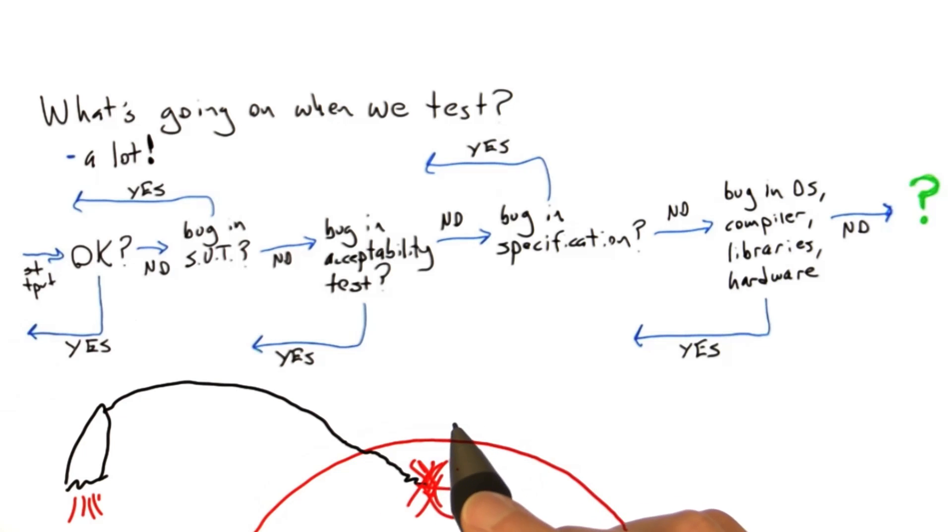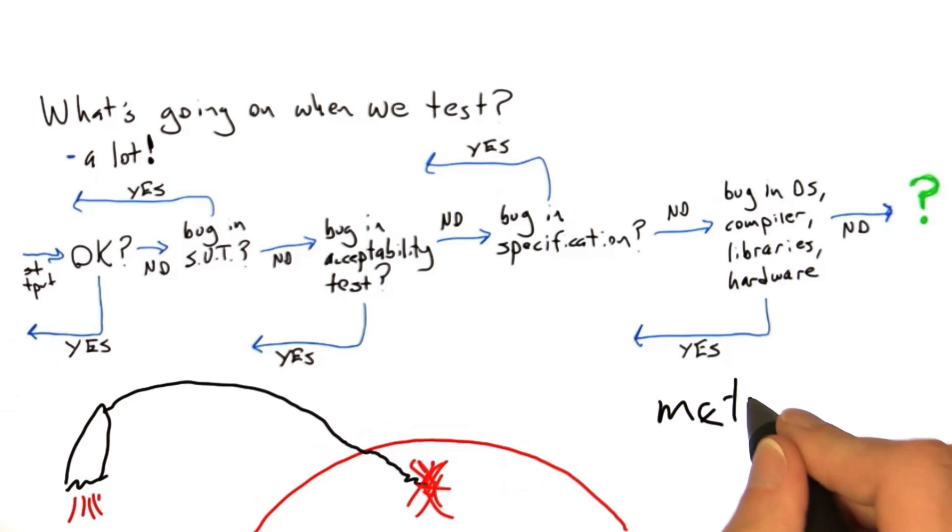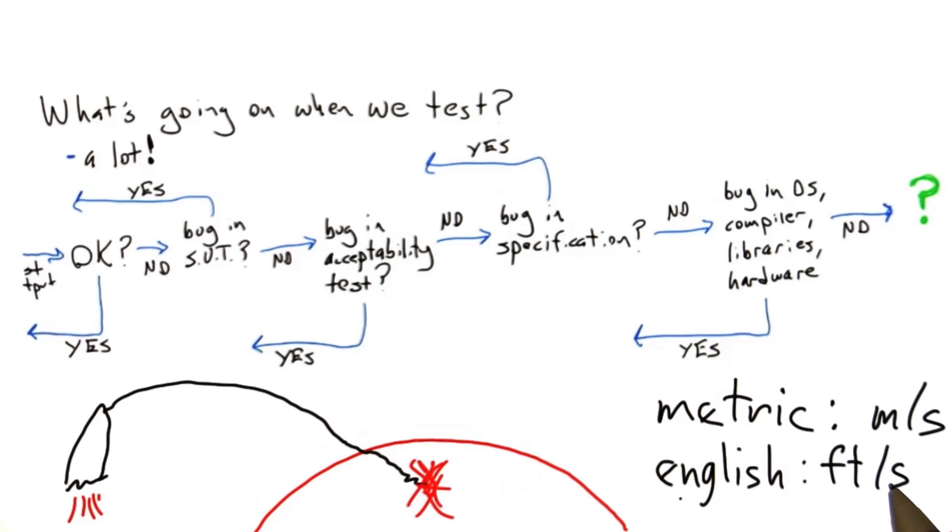What happened was a basic unit error. NASA expected units in metric, for example, meters per second, and Lockheed Martin programmed in English units, for example, feet per second.